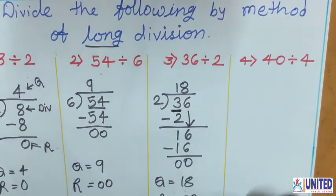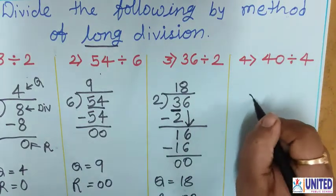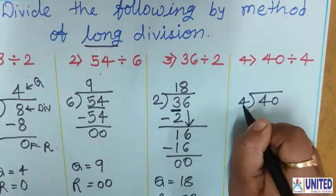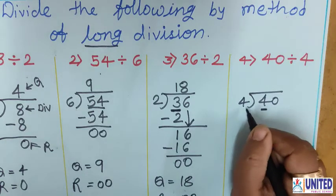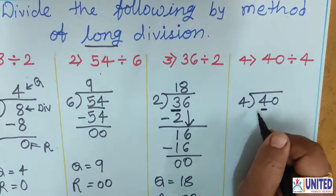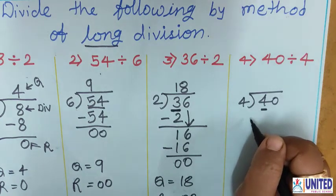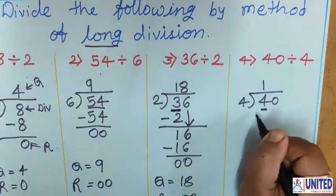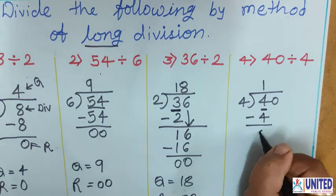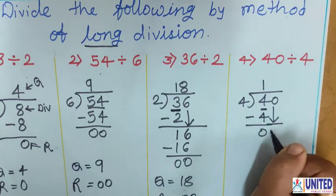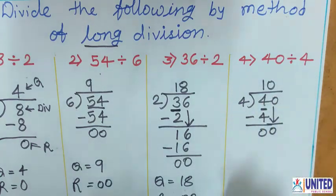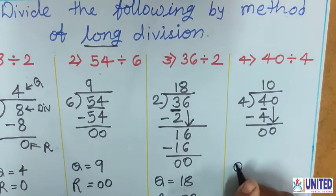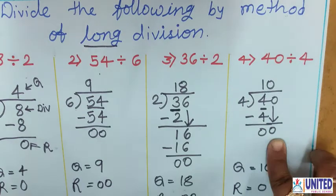Number 4: 40 divided by 4. Make the same structure. Write 40 inside and 4 outside. The first digit 4 is the same as the divisor. So 4 ones are 4. Bring down the 0. Then write 0 in the quotient. So Q equals 10 and R equals 0.